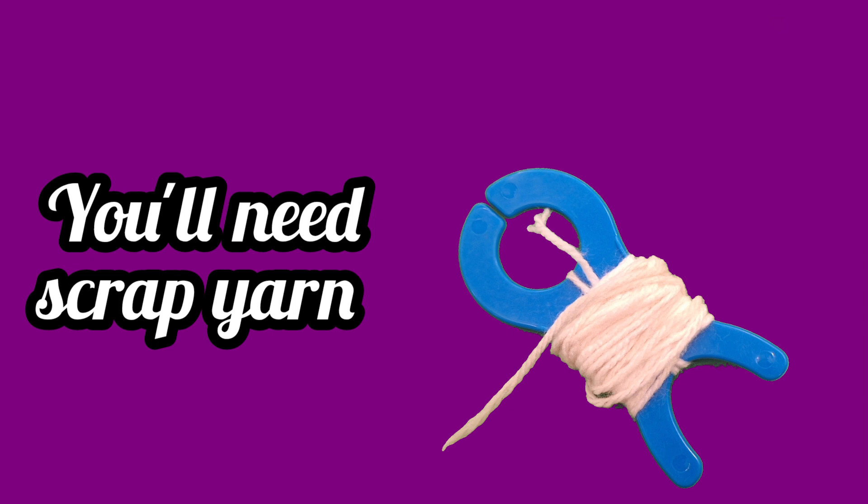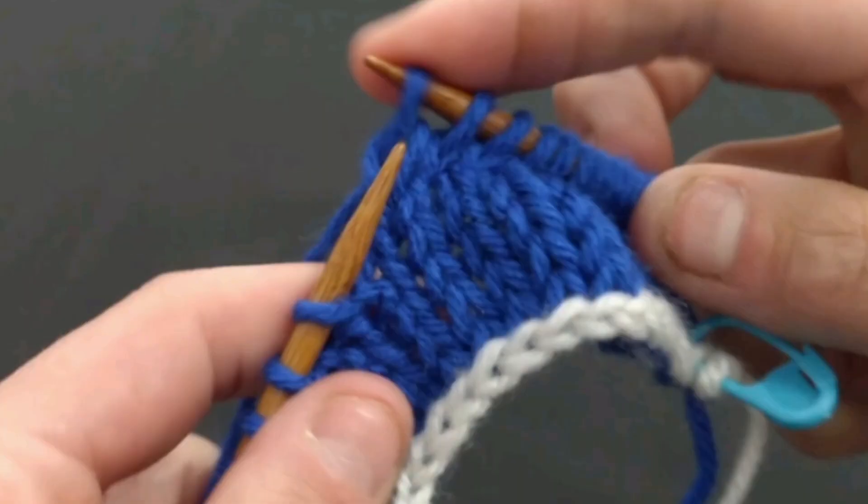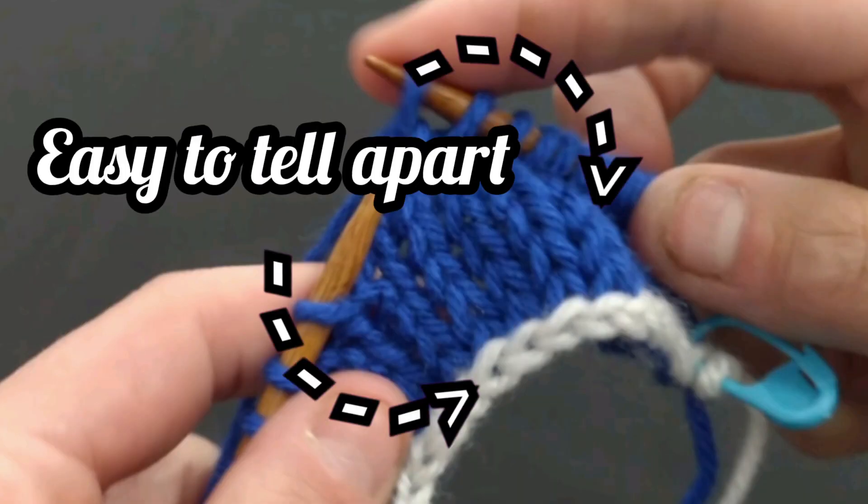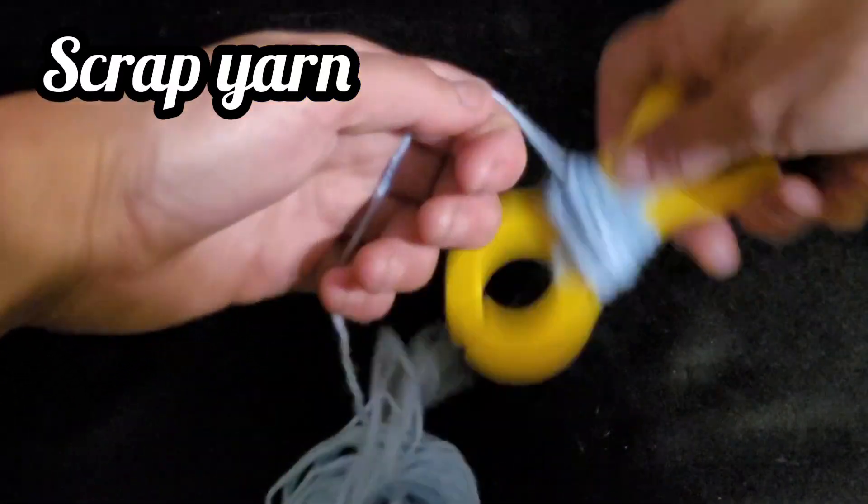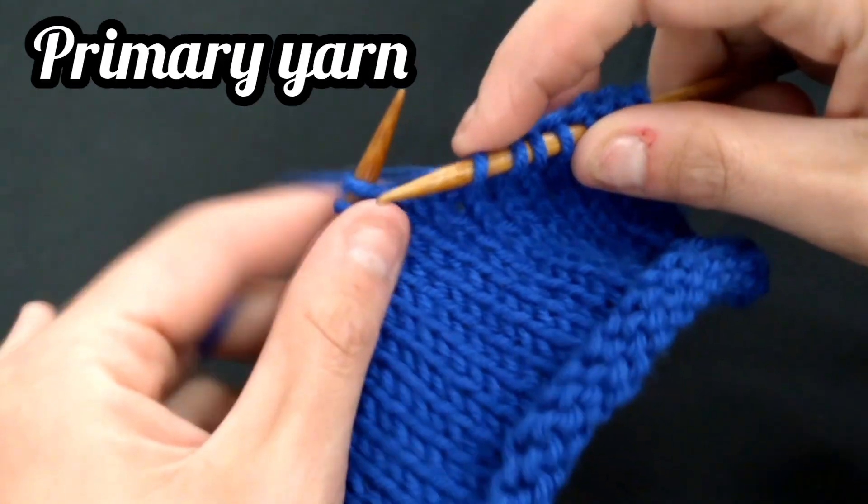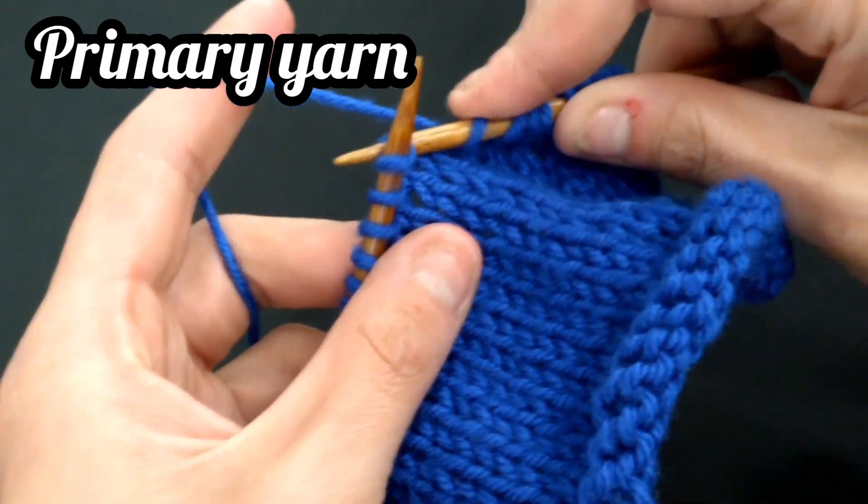It is recommended that it is done using scrap yarn in a contrasting color so that it is easily differentiated from your main yarn and thus easily removed. Throughout the instructions, we will be referring to scrap yarn and a primary yarn, or main yarn. Scrap yarn is a length of yarn which will be removed and will not be incorporated into your work. The main yarn is what will constitute your project.